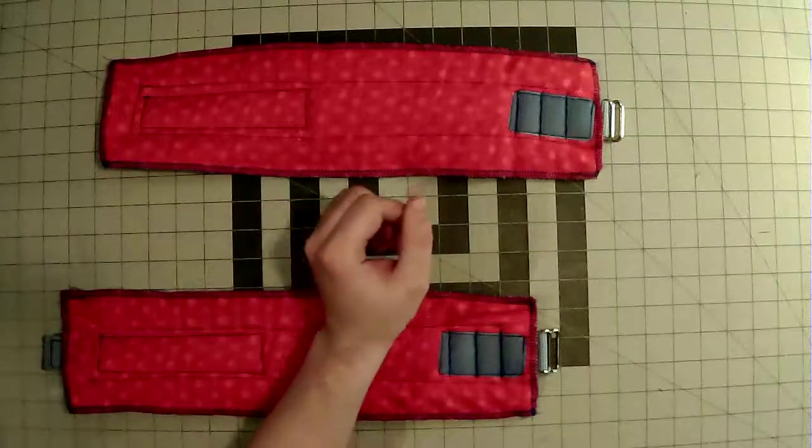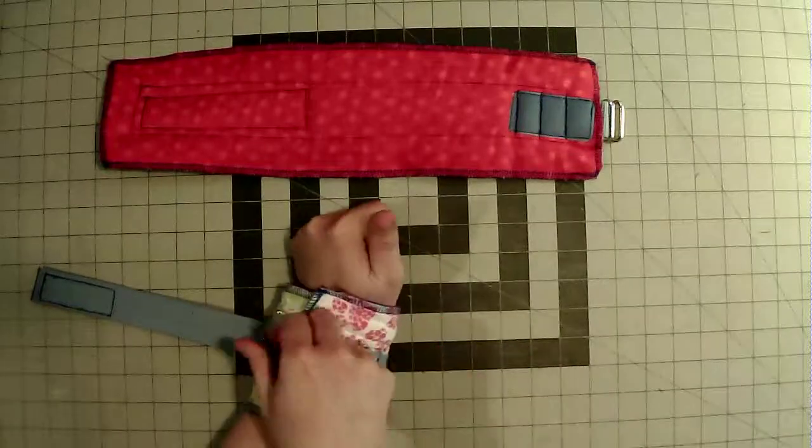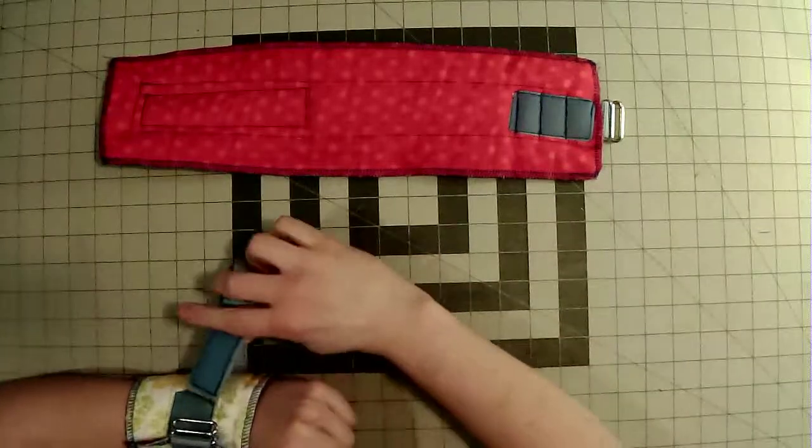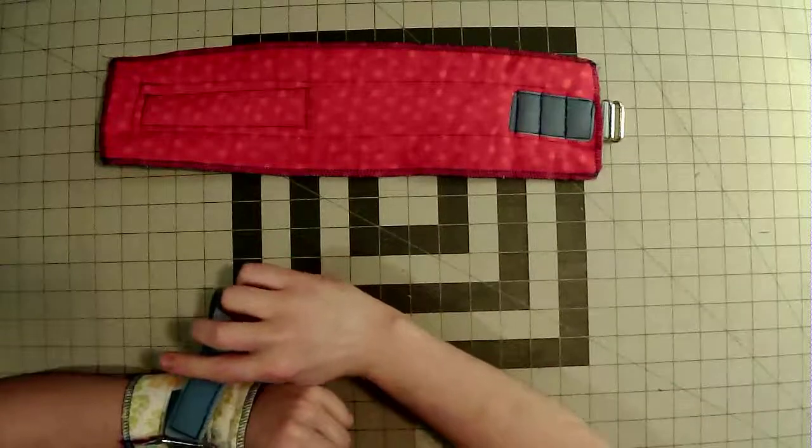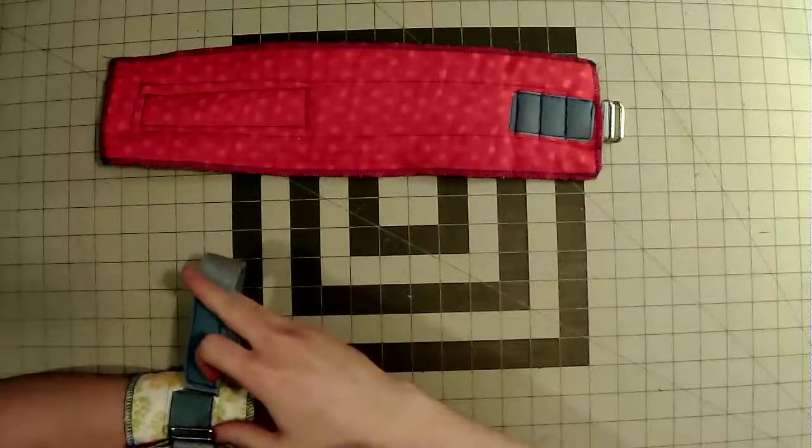To put it on, it's easy. Place the wrist in the restraint, wrap it over, feed the webbing through this ring here.